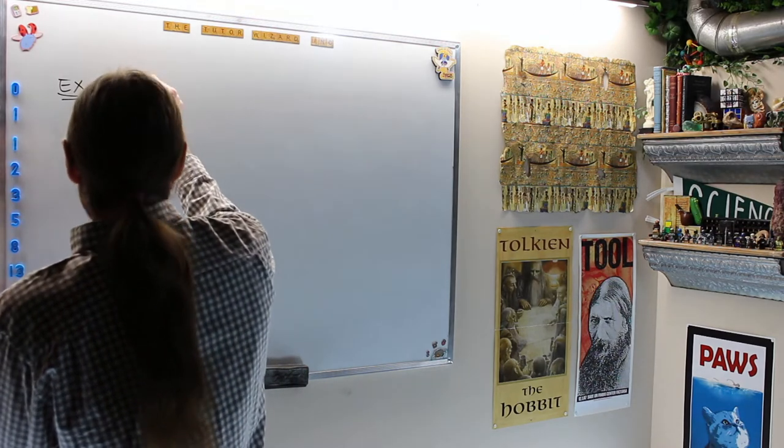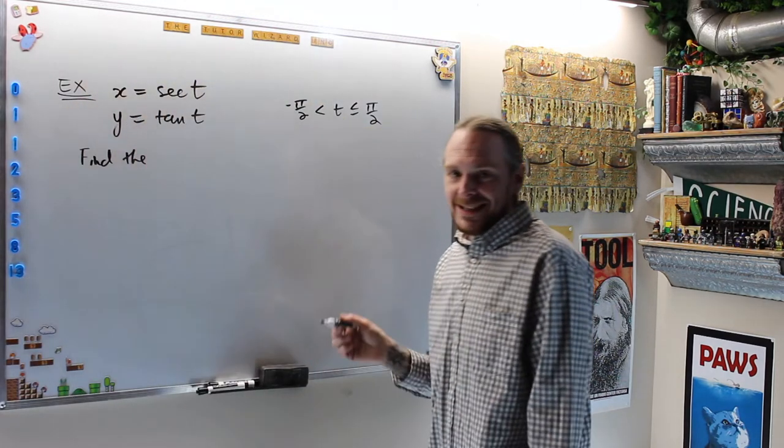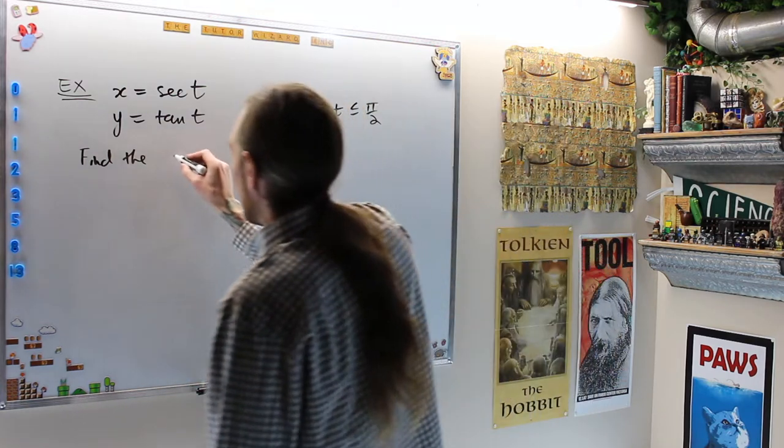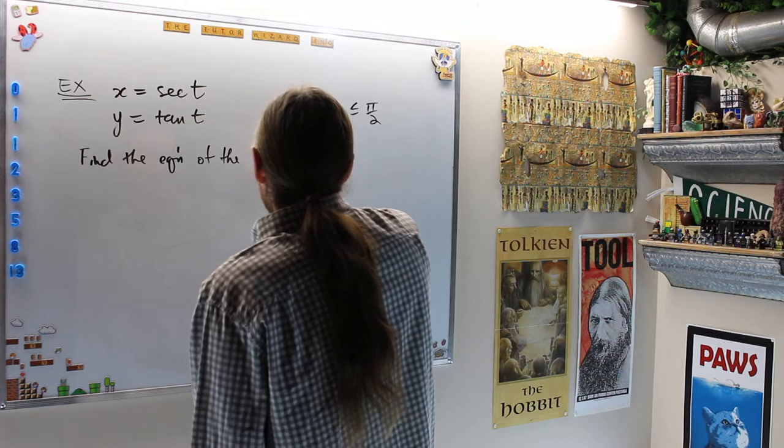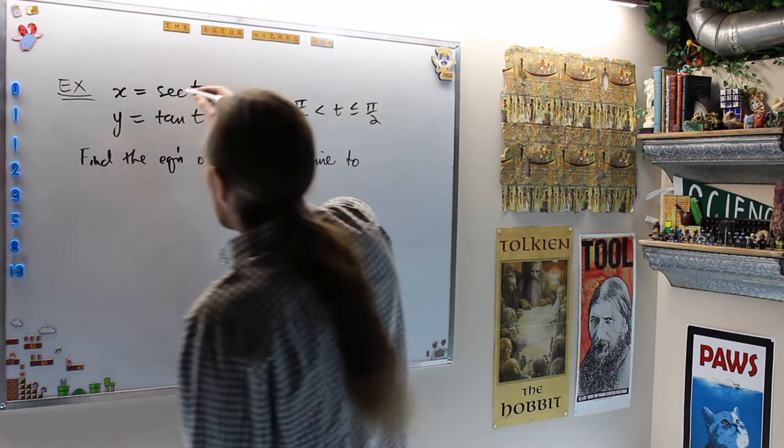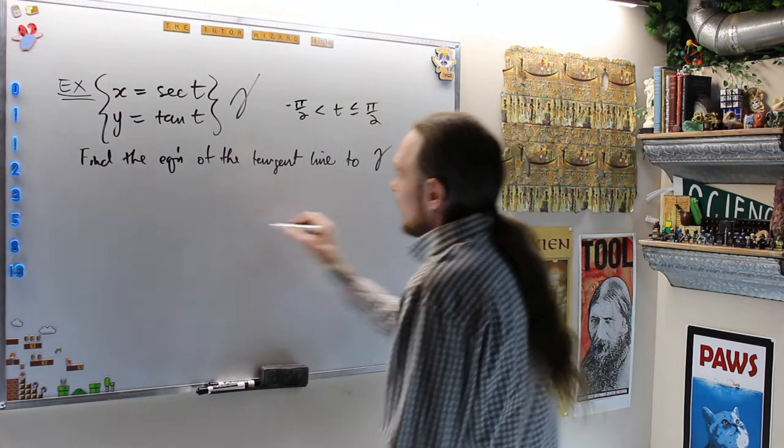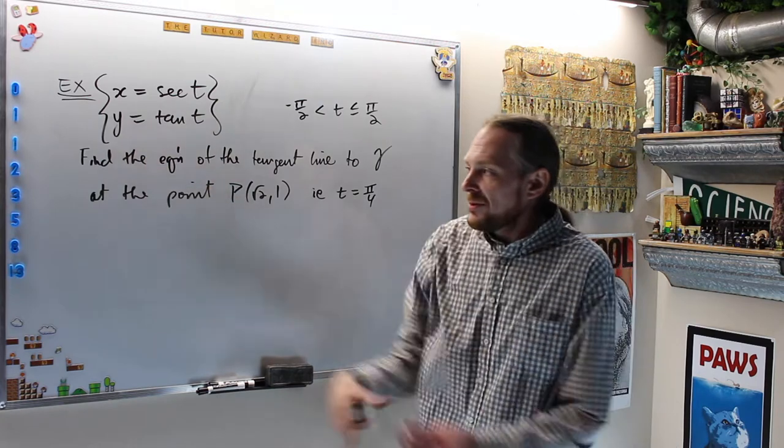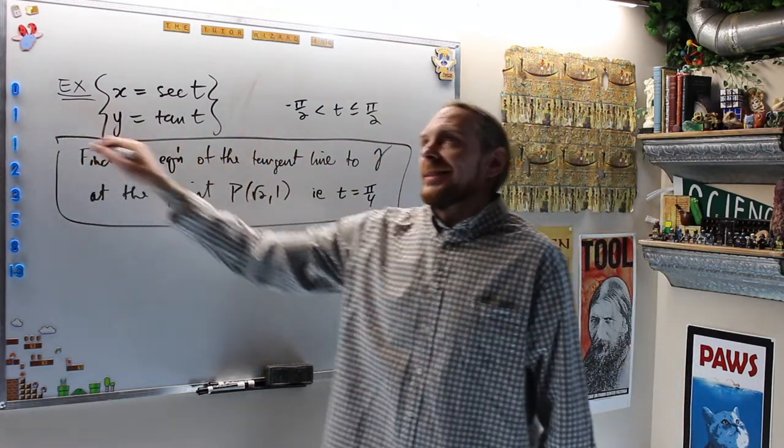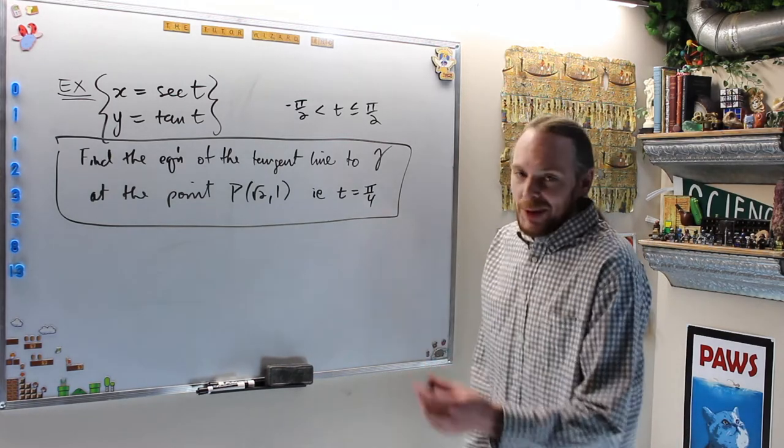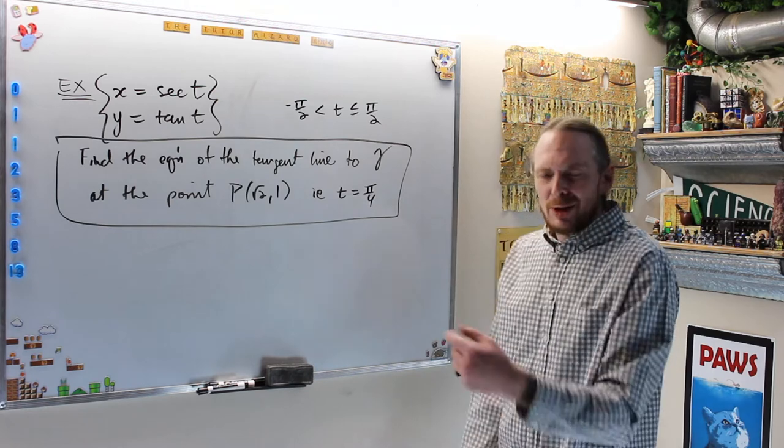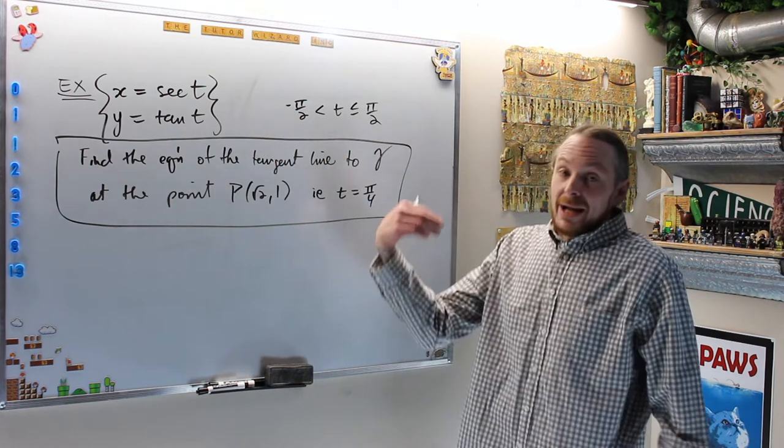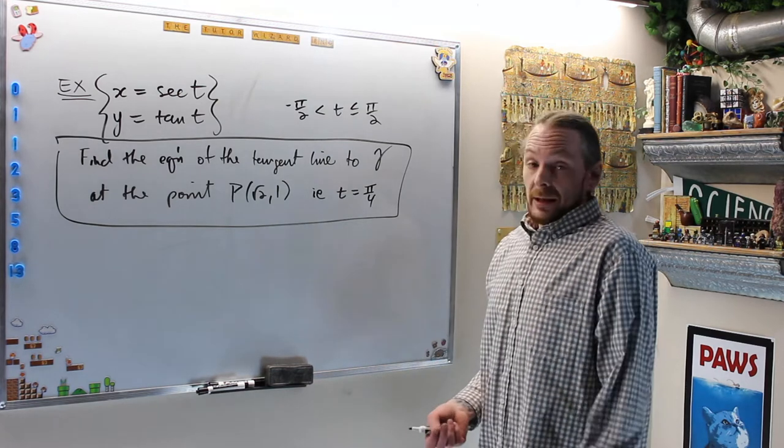Example, this is a hyperbola hidden in parametric form. Find the equation of the tangent line to gamma at the point. Using the derivatives, we're going to also phrase this in the day one types. Equations of tangent lines. The slope of that tangent line is the derivative, but now we have a parametric curve in parametric description. So we're going to have to find the derivative using the parametric formula.